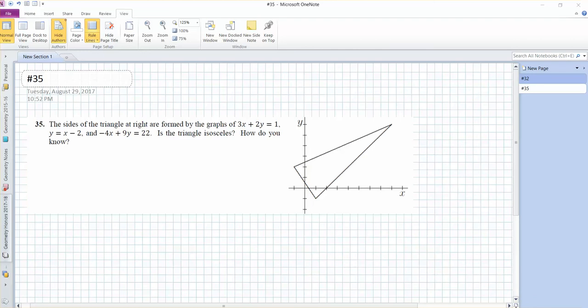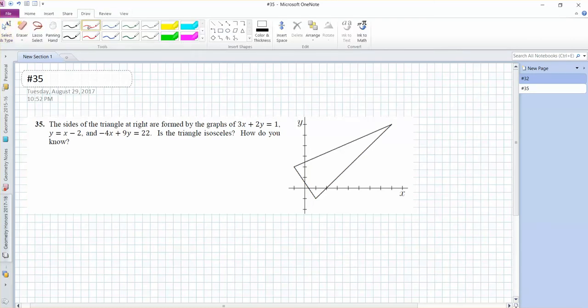So if you look at a picture, you might be able to tell that these three intersection points look awfully convenient. They look like lattice points. And if I'm going to eyeball it, it looks like 8, 6, 1, negative 1, and negative 1, 2. But how do you know those are the lattice points? Those are the actual intersection points of those three lines.